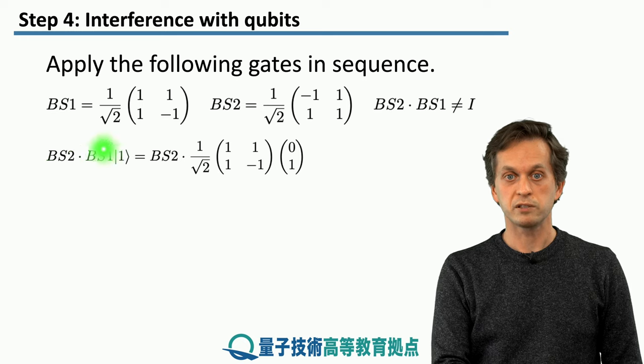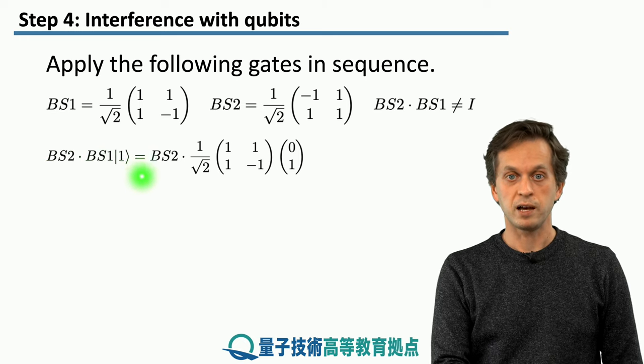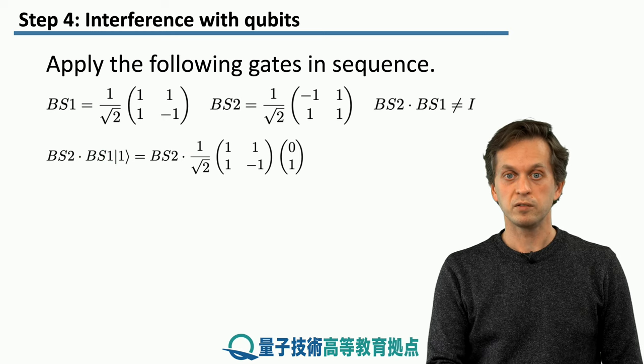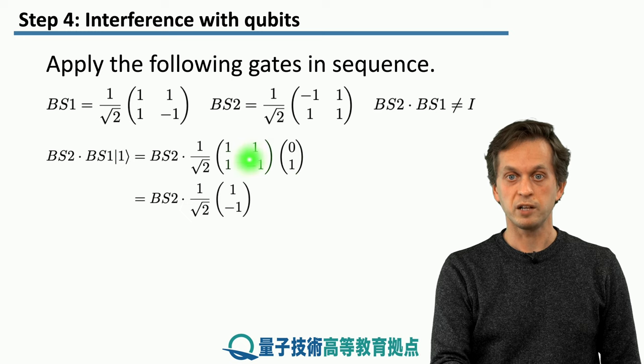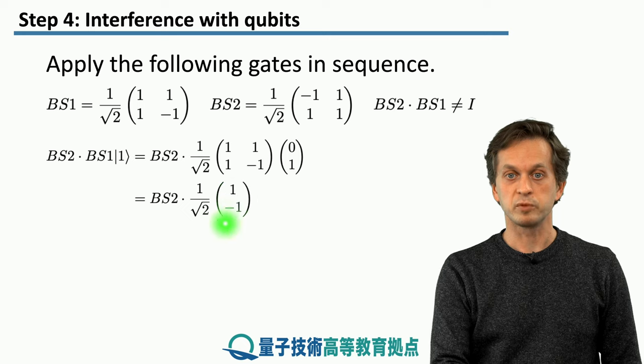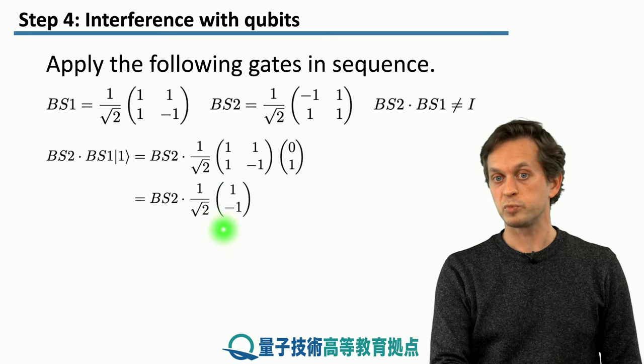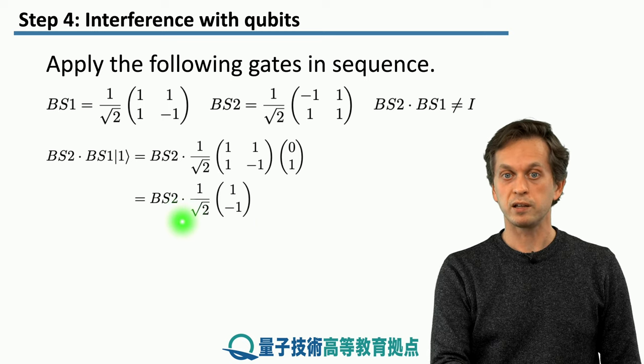Again, we take our initial state. Let's say our initial state is 1. We first apply the transformation BS1. And what we get is the following. We apply the Hadamard gate to the vector 0,1. And after simple multiplication, we got the following state vector. Which is just a superposition of 0, minus 1. And then we continue applying our gates. This time we apply BS2.